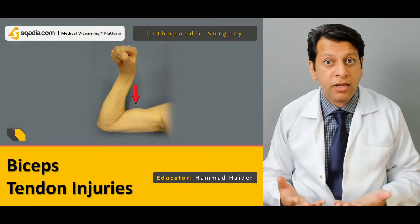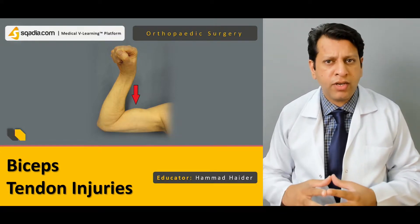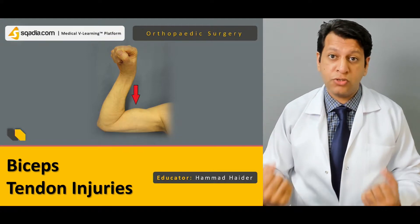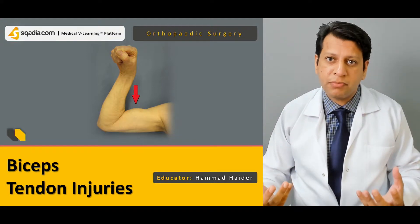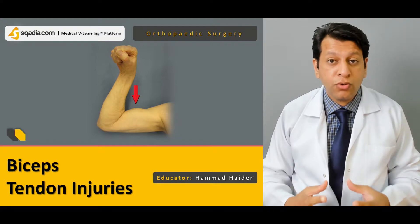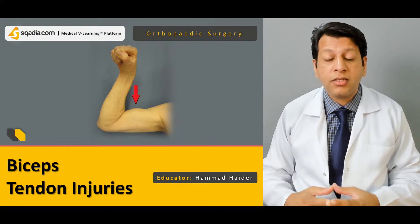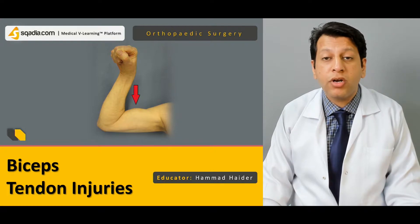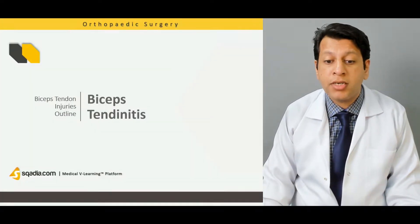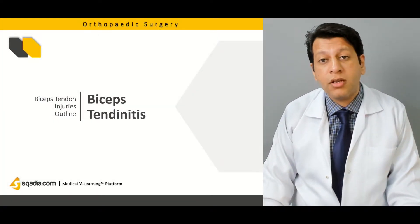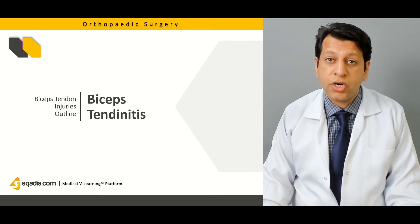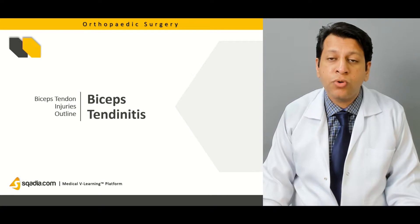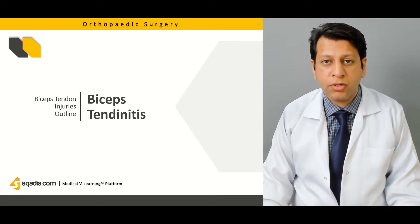What is the bicep brachii? You must have done some form of weight lifting. The muscle which, when you are supinating and flexing and showing it off, is actually the bicep. We will be briefly discussing the anatomy of the bicep before addressing the bicep tendon injuries. As there are two heads — the long head and the short head — they are attached on the radial bone at the bicep tuberosity.